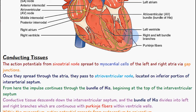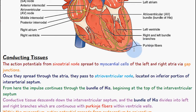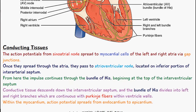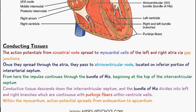You can see the Purkinje fibers here branching off from the bundle of His. The Purkinje fibers help to spread the action potential to the myocardial cells of the ventricles, and within the myocardium the action potential spreads from the endocardium to the epicardium.